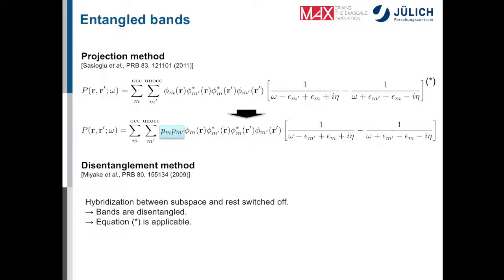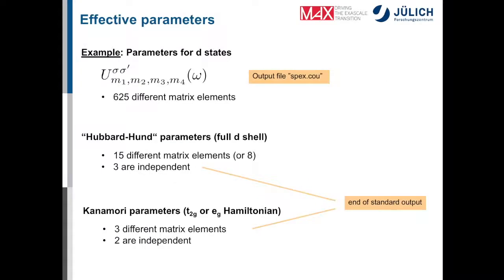Both of these methods are implemented. We usually use this one because it's a bit more straightforward. But in principle, you can use both approaches. And then you get the results, I mean, the Hubbard-U parameters or matrix elements with respect to the Wannier functions. Here is an example for the D states. M1, M2, M3, M4, these are magnetic quantum numbers going from minus 2 to 2 for the D states.